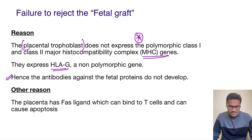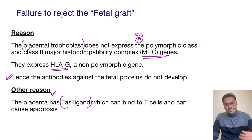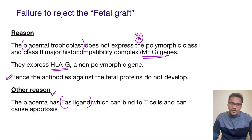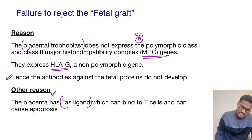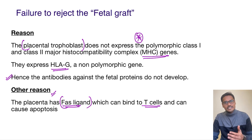We also have one more backup mechanism in humans: the placenta also has a ligand called the Fas ligand. So just in case the mother produces some antibodies against the fetus, this placenta has Fas ligands which can bind the T-cells and cause their apoptosis, thereby preventing an immune attack on the fetus.